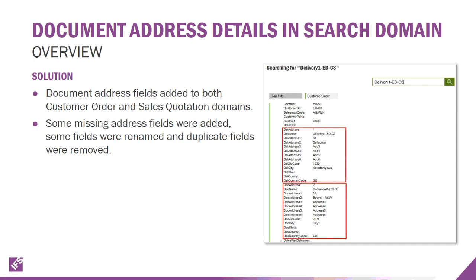For users of IFS Enterprise Application Search, a small enhancement has been added. There was a request to add the ability to search for customer name. Document address fields have been added to both the customer order and sales quotation domains, so that if you searched on a specific address you would now find those records.